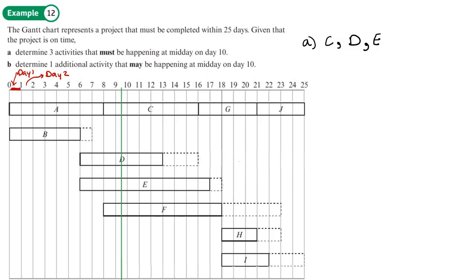Then if we look at activity F, now what happens to activity F? Now if I move this all the way across, F is 10 days long. So if it moved across to the very latest time that it can finish, I think this is 10 here. Or any time after this day, as it starts on, it doesn't have to be happening on day 10. So actually F may be happening at midday on day 10, but it doesn't have to happen. It can be delayed beyond the midday of day 10. And H and I, well, then they're nowhere close. So actually it's C, D and E.